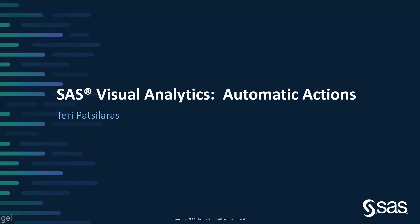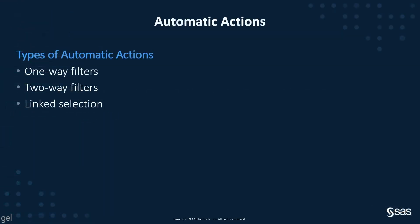In this video, I will walk through how to configure automatic actions for a SAS Visual Analytics report and talk about example use cases for when to use each type. There are three types of automatic actions: one-way filters, two-way filters, and linked selection.